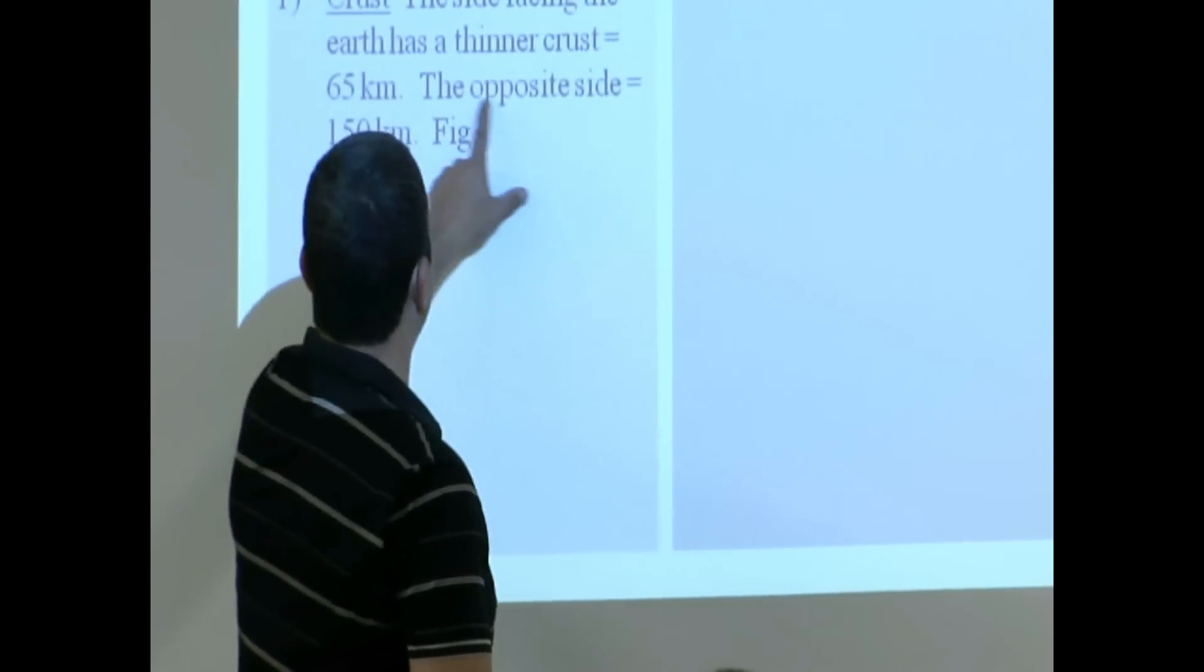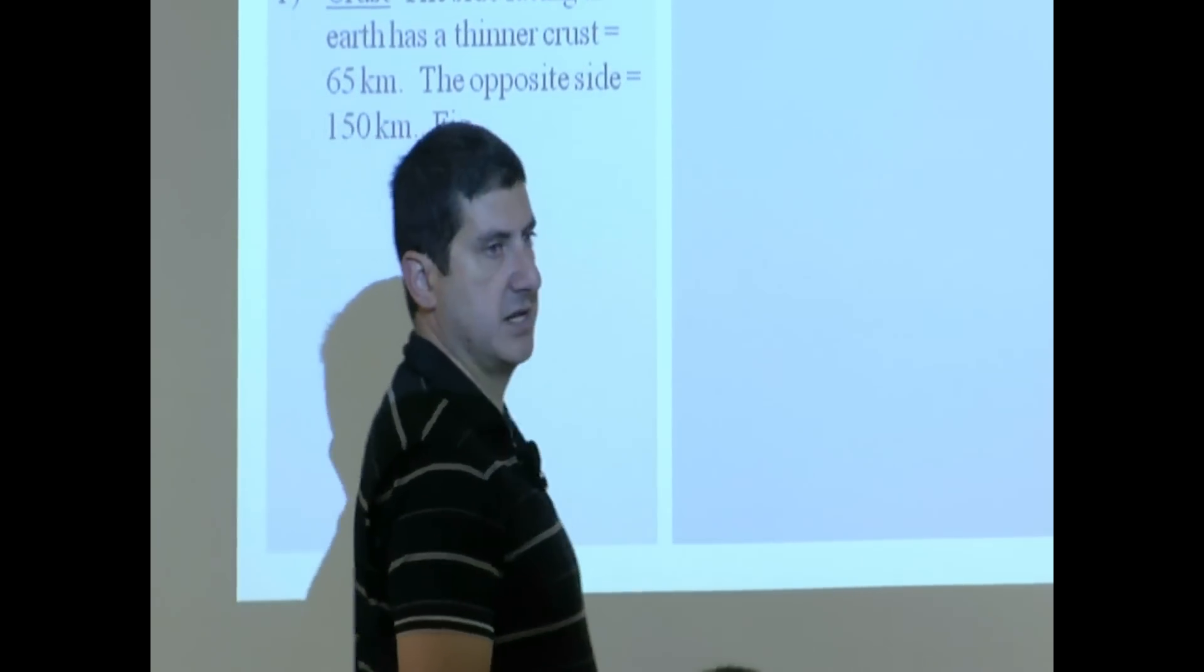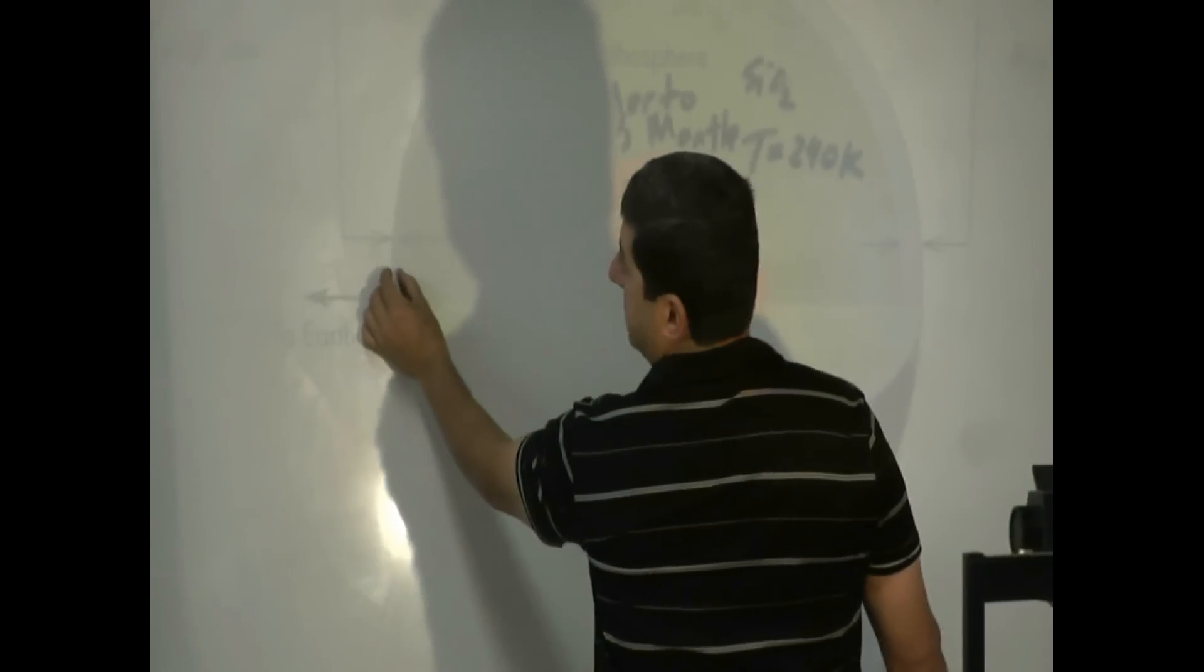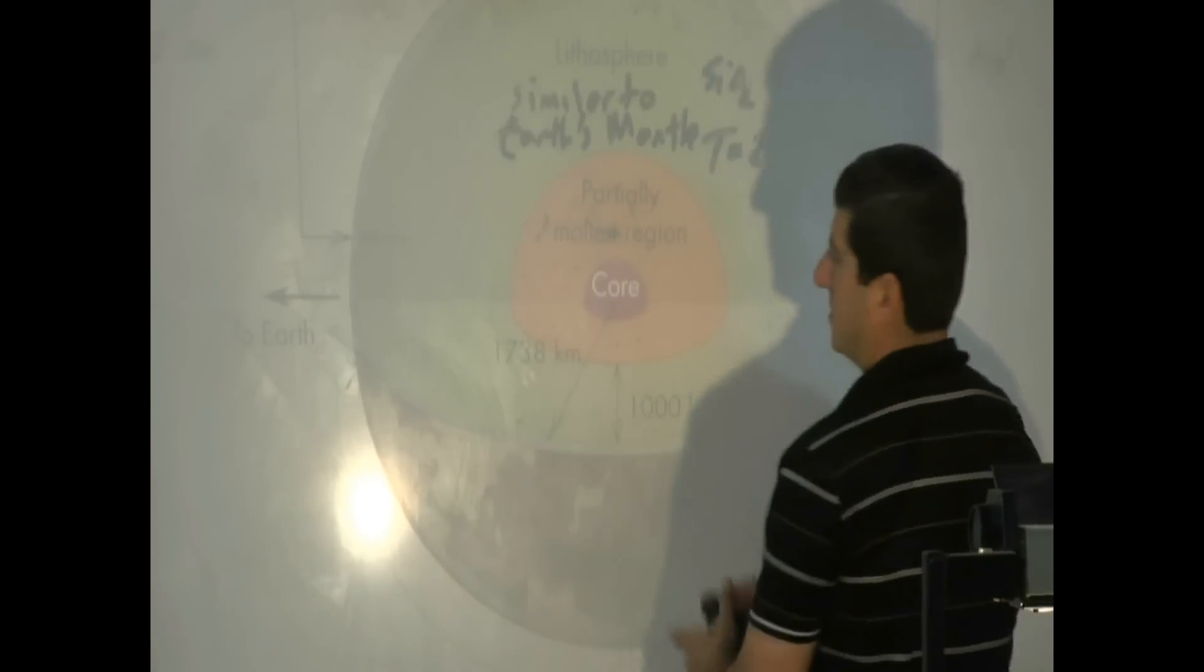So crust, the side facing the Earth has a thinner crust, 65 kilometers. The opposite side has a wider, a thicker crust. So the side facing the Earth is much thinner. So this is towards Earth.